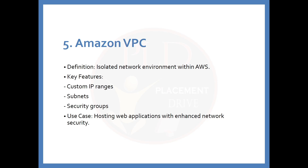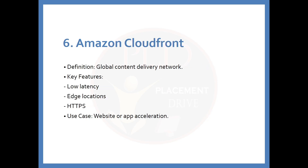The fifth service is Amazon VPC. The definition is: an isolated network environment within AWS. Key features include custom IP ranges, subnets, and security groups. The use case is hosting web applications with enhanced network security. The sixth service is Amazon CloudFront. The definition is: a global content delivery network. Key features include low latency, edge locations, and HTTPS support. The use case is website or app acceleration.